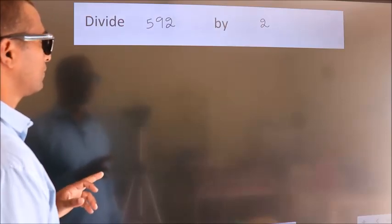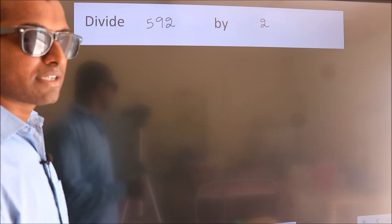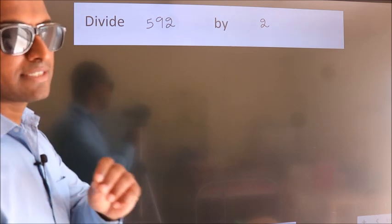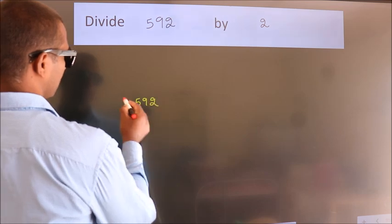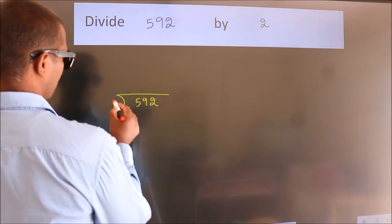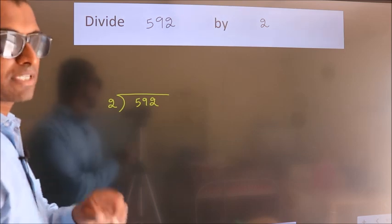Divide 592 by 2. To do this division, we should frame it in this way. 592 here, 2 here. This is your step 1.